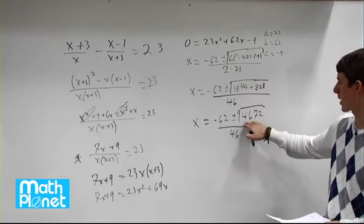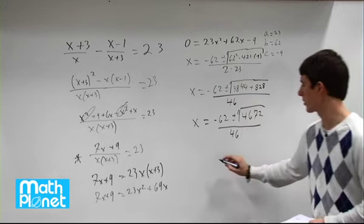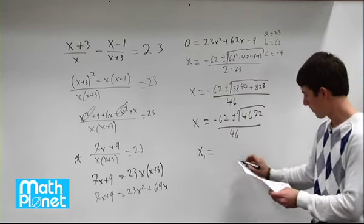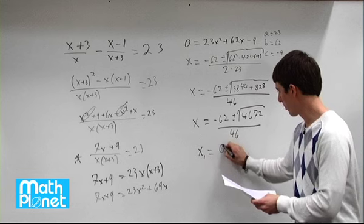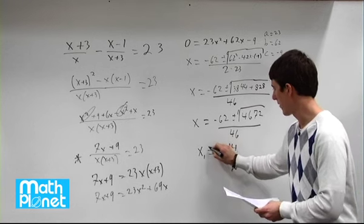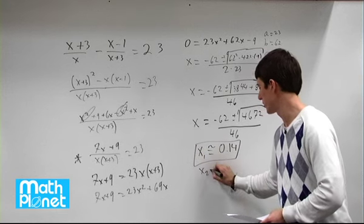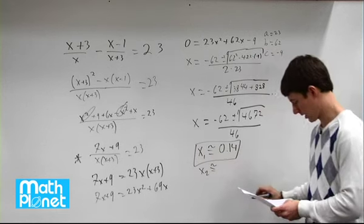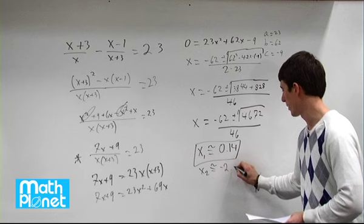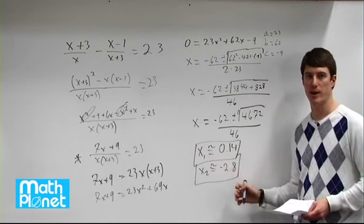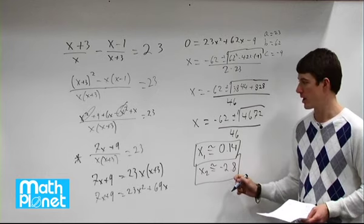When you do that with your calculator and the square root of this, what you're going to get is two values. x equals, we have positive 0.14 and that's approximate and we also have x2 is approximately equal to negative 2.8.